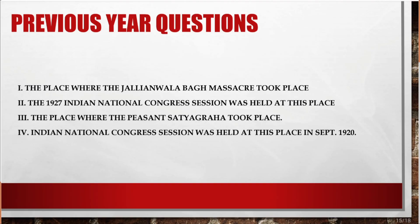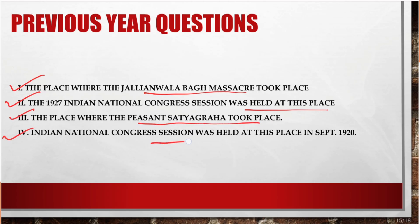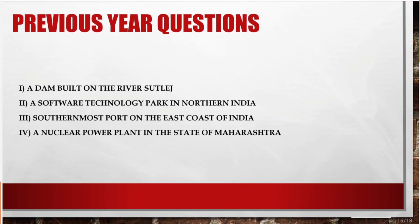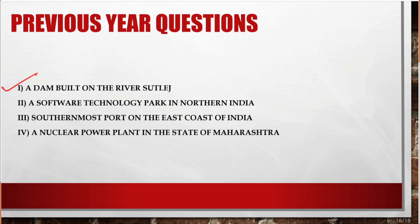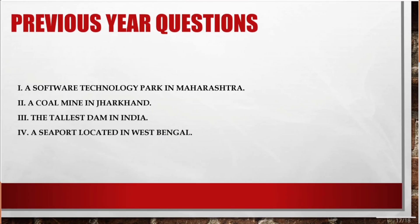Let's look at some previous year questions asked in board exams. These include: the place where Jallianwala Bagh massacre took place; where the 1927 Indian National Congress session was held; the place where Kheda Satyagraha took place; the Congress session held in September 1920; a dam built on river Sutlej; a software technology park in northern India; the southernmost port on the east coast of India; a nuclear power plant in Maharashtra; a software technology park in Maharashtra; a coal mine in Jharkhand; the tallest dam in India; and a seaport located in West Bengal.